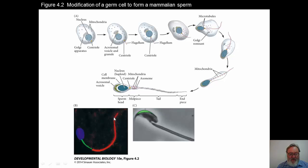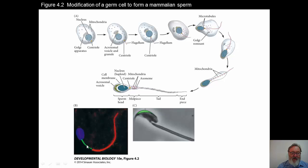Here are a couple of examples. This is a bull sperm — you can see the nuclear area stained blue, the midpiece mainly mitochondria stained green, and the tail piece where tubulin is stained red. So this is a mammalian bull sperm.